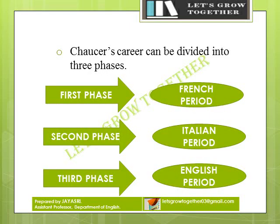Chaucer's career can be divided into three phases. The first phase is the French period, the second is the Italian period, and his last phase is the English period.